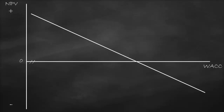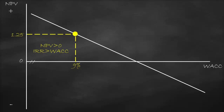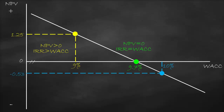Since the relationship between net present value and WACC is negative, I will draw a downward-sloping curve. For scenario one, at WACC of 9 percent, we go up to intersect our curve and go horizontally — this gives us NPV of 1.25 million. Decision rule: NPV is bigger than zero, consequently IRR of 9.7 percent is bigger than WACC. Scenario two: WACC is 9.7 percent, NPV is zero — IRR equals WACC. Scenario three: WACC of 10 percent gives NPV of negative 0.53. Decision rule: if NPV is lower than zero, IRR will be lower than WACC.